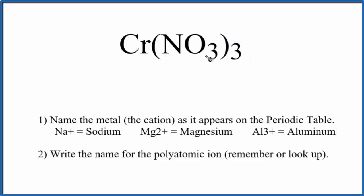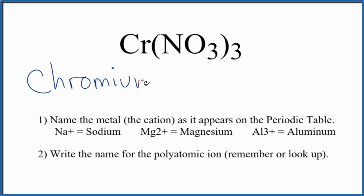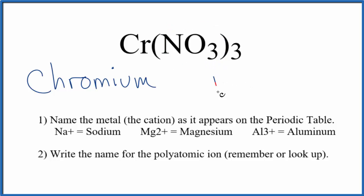So we have our nitrate ion, and it's bonded to chromium, which is a transition metal. So what we'll do first is write the name of the metal, chromium, and then we'll write the name of the polyatomic ion, nitrate. So we just write nitrate, lowercase n, and so far the name we have is chromium nitrate.